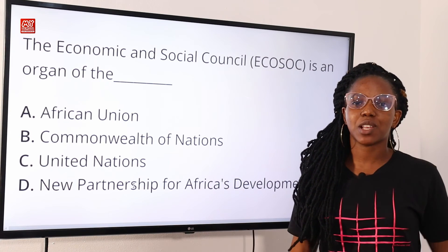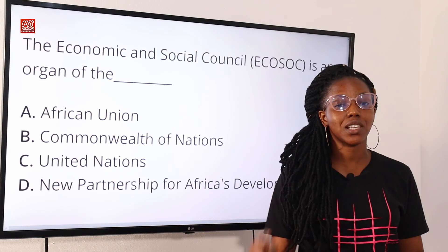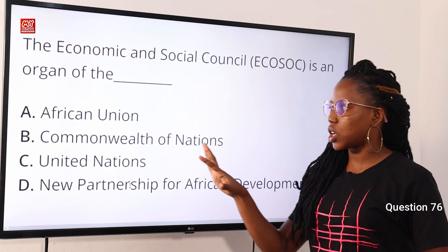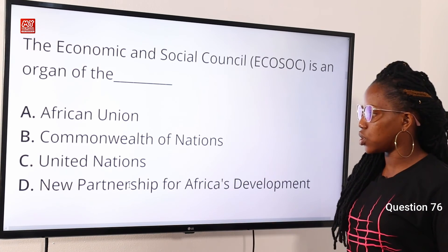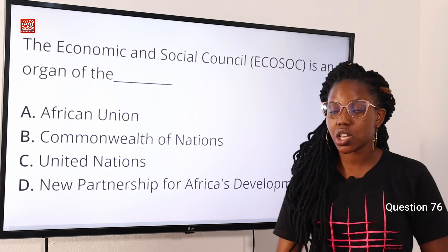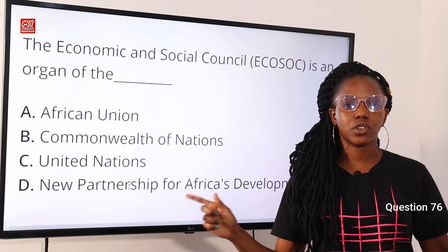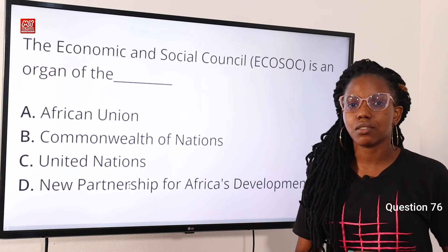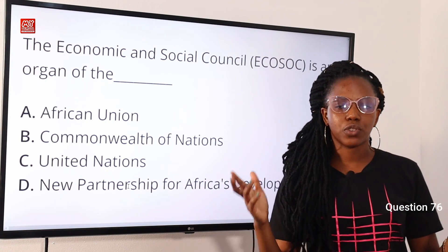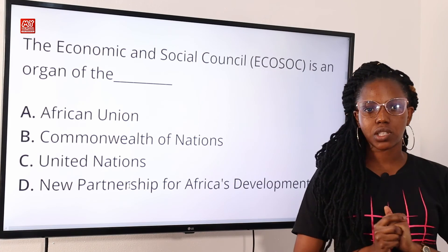Question 76: the Economic and Social Council is an organ of the — option A, African Union; option B, Commonwealth of Nations; option C, United Nations; option D, New Partnership for Africa's Development. The answer is option C, United Nations. The United Nations has six organs: the General Assembly, the Security Council, the Economic and Social Council, the Trusteeship Council, the International Court of Justice, and the United Nations Secretariat. Option C is the correct answer.